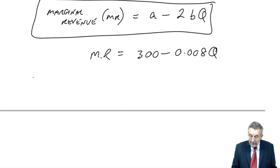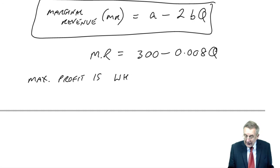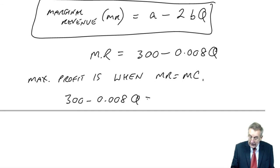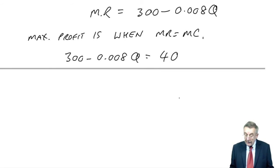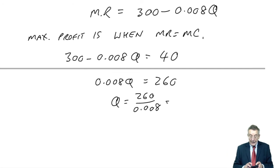As I think I've explained enough already, the maximum profit is when marginal revenue equals marginal cost. We know the marginal revenue, the equation is 300 minus 0.008Q. Marginal cost is the variable cost, the cost of each extra unit, and the variable cost in exercise 5 is 40. And so now it's a bit of simple algebra. Subtract 40 from both sides, 300 minus 40 is 260, add 0.008 to both sides 0.008Q. Q is therefore 260 over 0.008, which is 32,500.